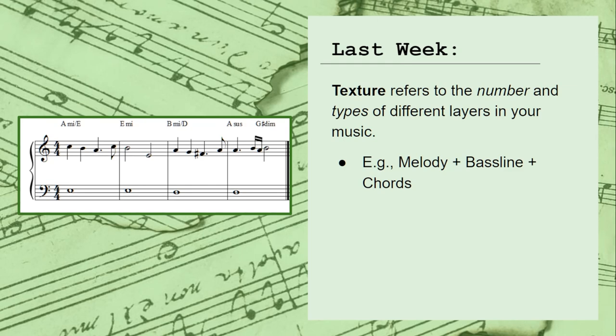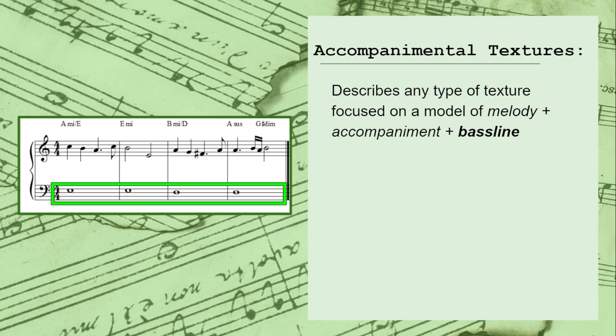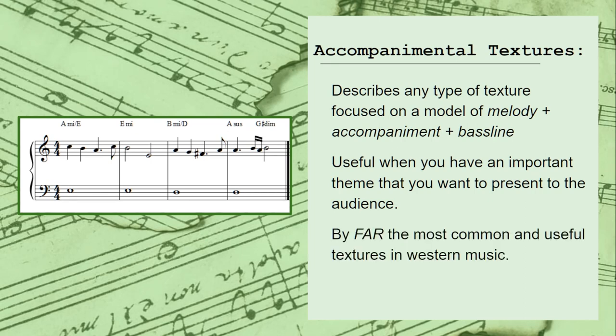Last week we introduced the ideas of orchestral textures. Texture is just another word for the number and types of different layers in your music. The idea of an accompanimental texture is just a broad term used to describe any type of texture that focuses on a model of melody plus accompaniment plus baseline. These are the textures that you use when you have an important theme in your music that you want to present to the audience, but with something a little more complex than just a simple linear texture. The accompanimental textures are by far the most common and useful textures available in western music, and they make up the vast majority of all film music and songs.